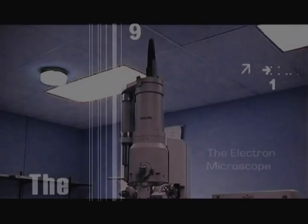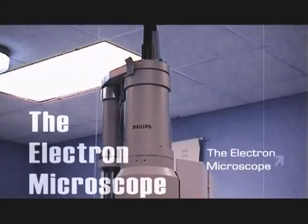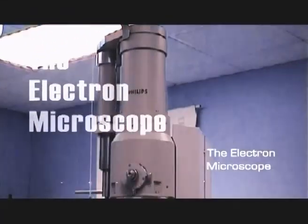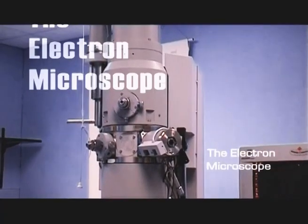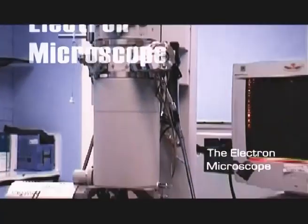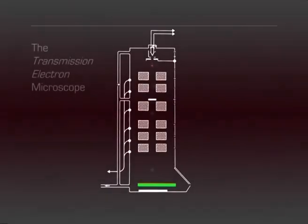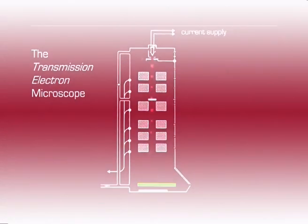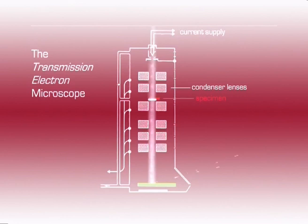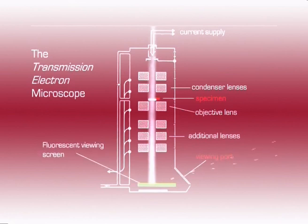The transmission electron microscope is capable of much greater magnification, up to 1 million times. It has a resolving power about 200 times greater than the light microscope. This is achieved by using a high velocity beam of electrons instead of light to produce an image.